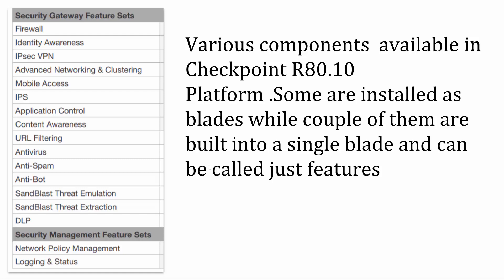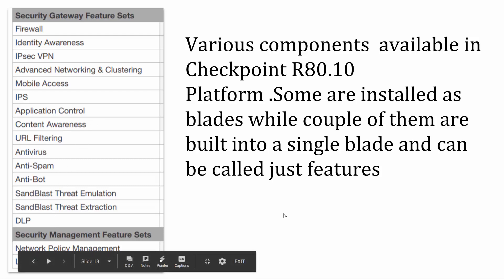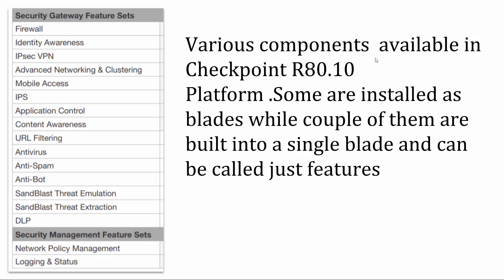The features available in a gateway include firewall, identity awareness, IPSec VPN, clustering, mobile access, intrusion prevention systems, application control, content awareness, URL filtering, and more. Some are installed as blades and some as standalone features. For example, the threat prevention blade covers antivirus, anti-spam, anti-bot, and IPS — so a single blade can contain multiple features.